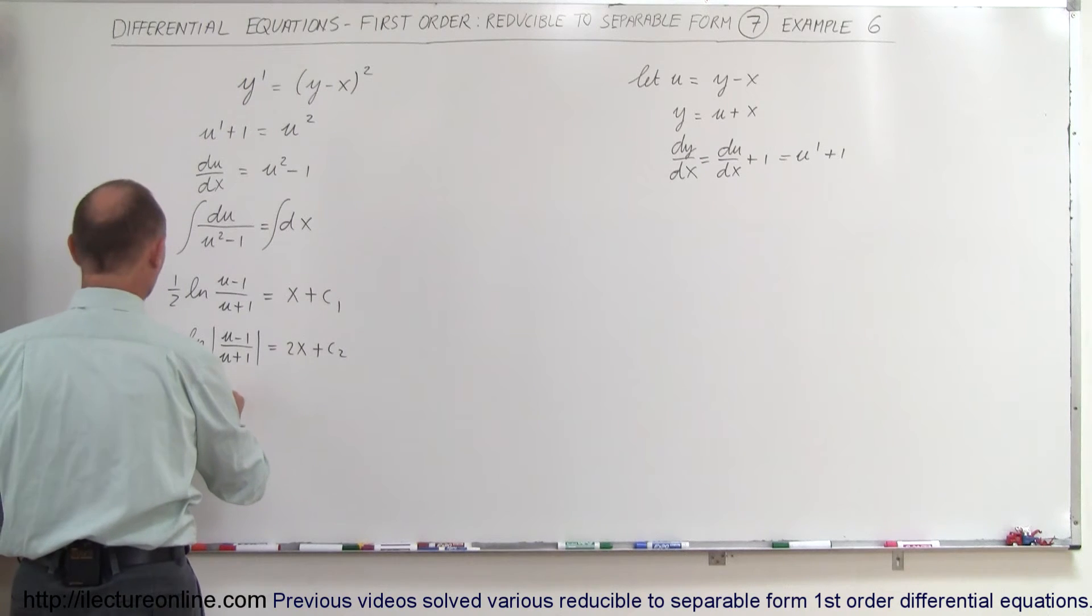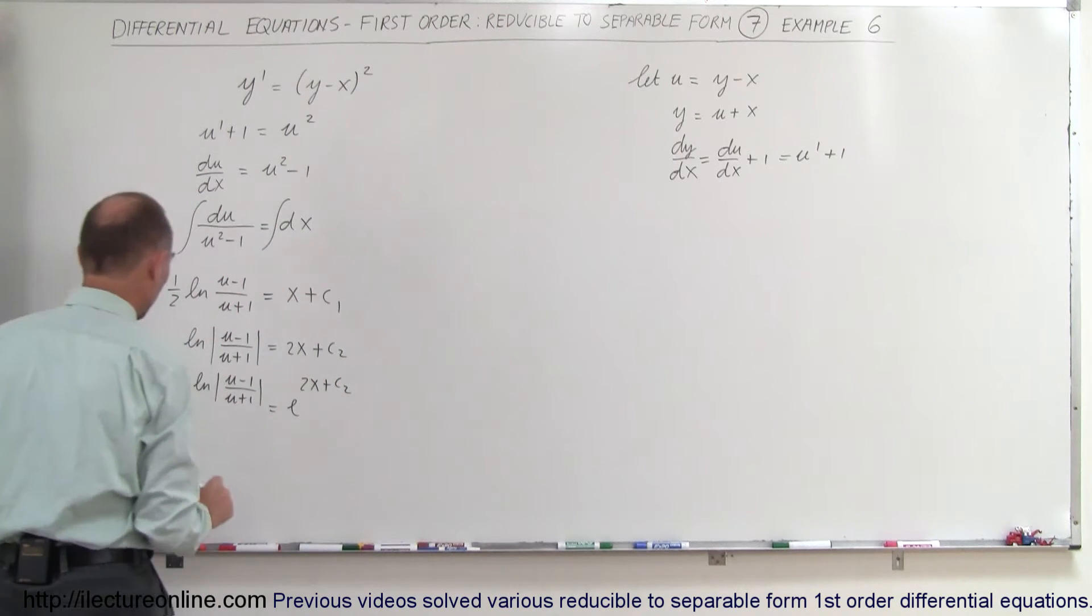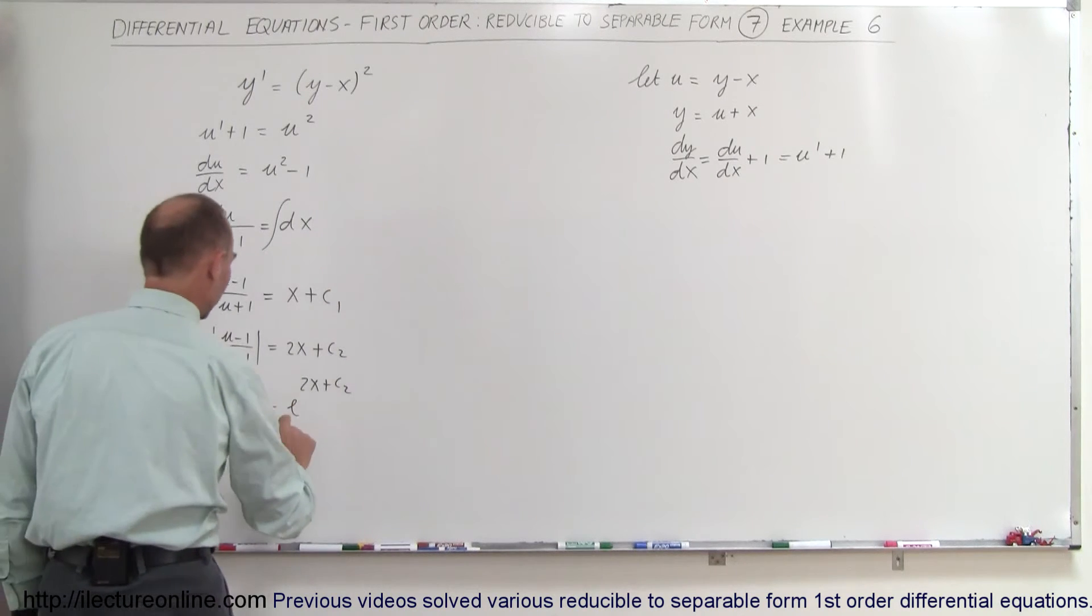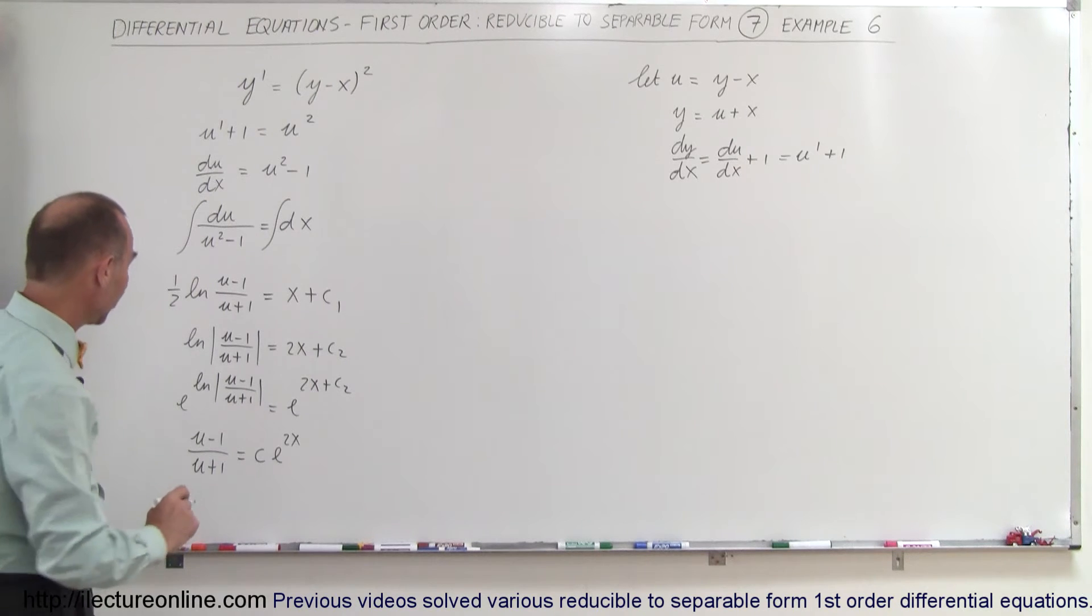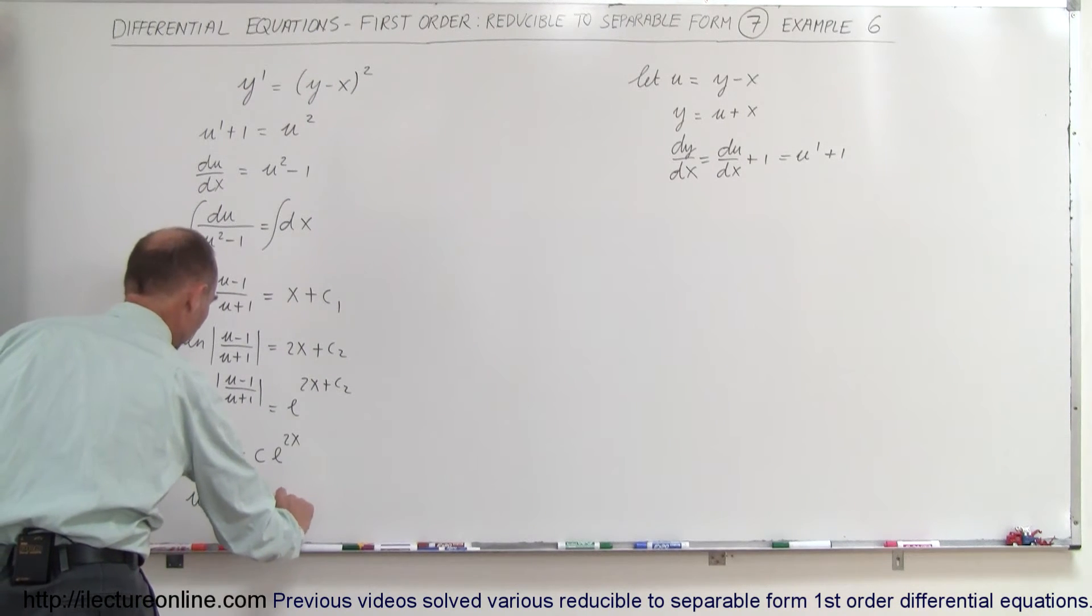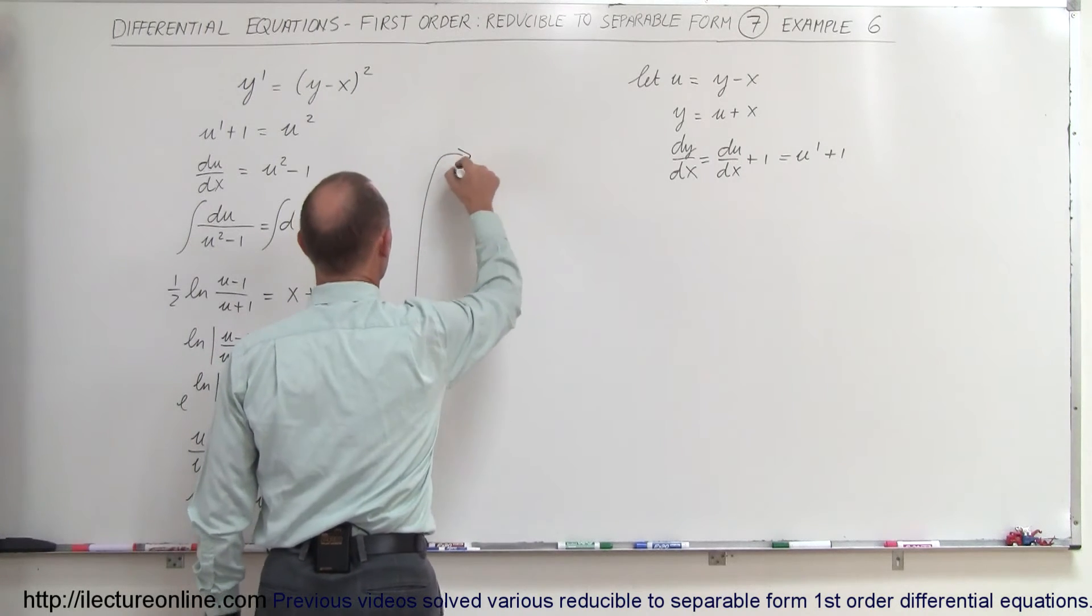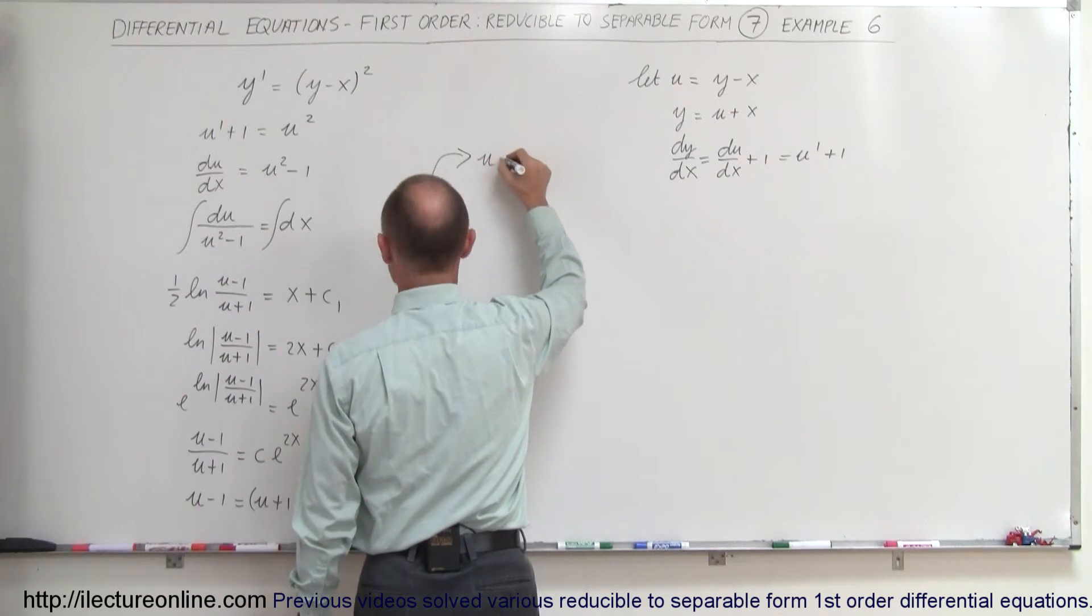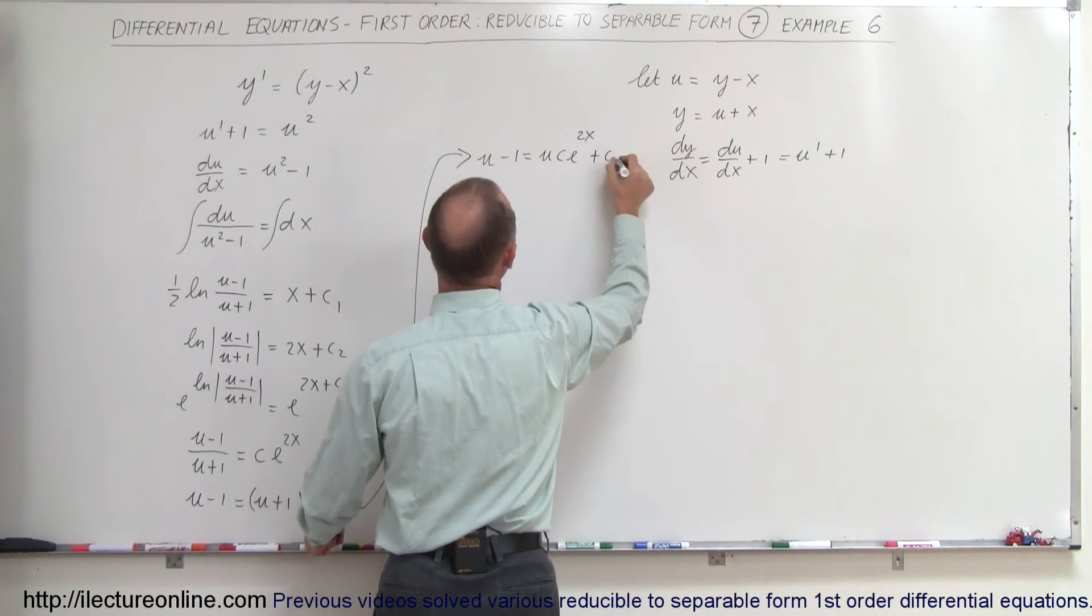Now we take the exponential of both sides, so we have e to the natural log of (u minus 1) over (u plus 1) equals e to the (2x plus some constant), which can be written as (u minus 1) divided by (u plus 1) equals some constant of integration times e to the 2x. We can multiply both sides by (u plus 1), so this becomes u minus 1 equals (u plus 1) times c e to the 2x.